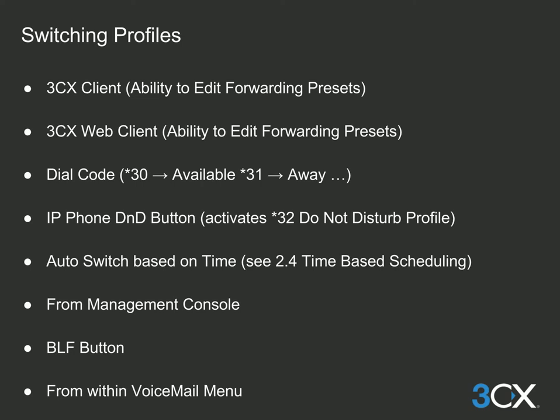After dialing star 3, you choose the relevant status: 0 for Available, 1 for Away, 2 for Do Not Disturb, 3 for Custom Profile 1, and 4 for Custom Profile 2. If your IP phone has a Do Not Disturb button, you can activate that profile status using this button, and pressing it again will activate the Available profile.